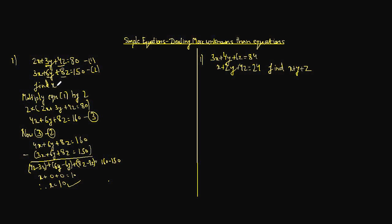Now for Case 2: we have 3x plus 4y plus 6z equals 84 as equation 1, and a second equation. We need to find x plus y plus z. Looking at the difference in coefficients of x, y, and z: 3 minus 1 equals 2, 4 minus 2 equals 2, and 6 minus 4 equals 2. So it's a good idea to subtract equation 2 from equation 1.